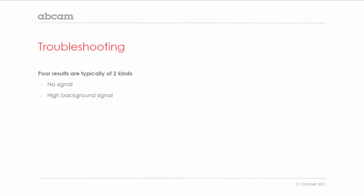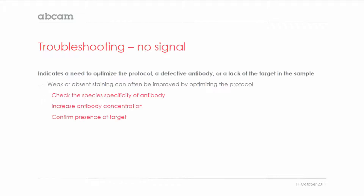Typically poor results are of two kinds. Either you obtain no signal at all, or there is a high background staining. No signal indicates a need to optimize the protocol, a defective antibody, or a lack of the target in the sample.